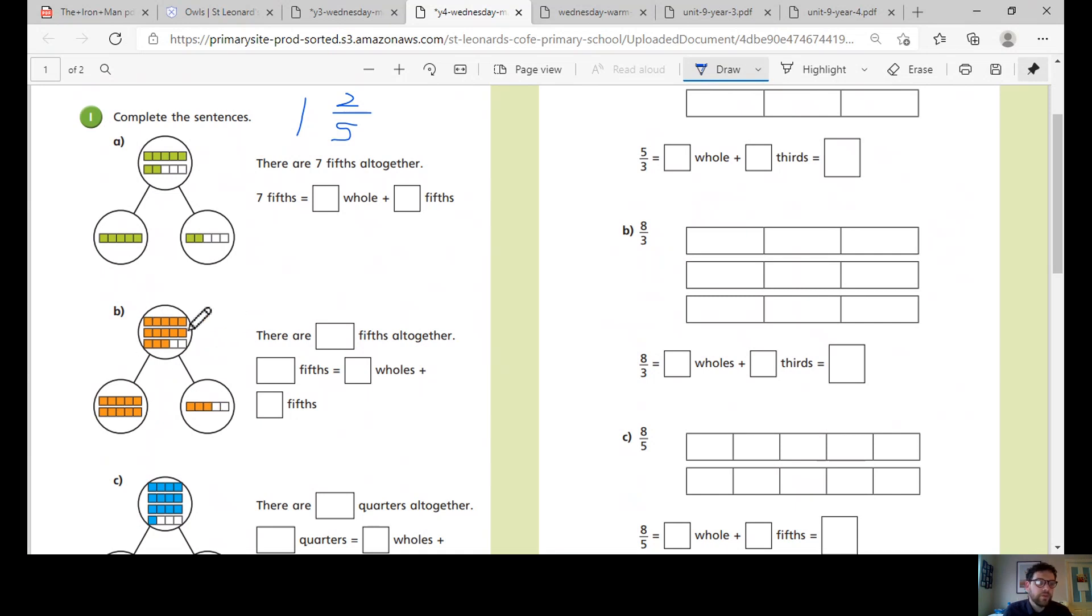So how many holes? So one hole, two holes. We've got two holes. And then we've got one, two, three, and three fifths.